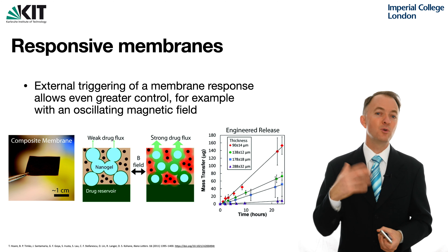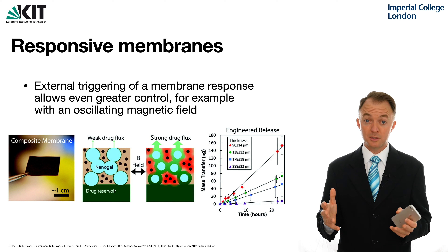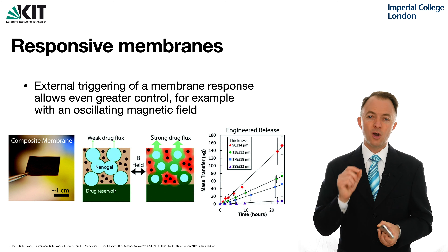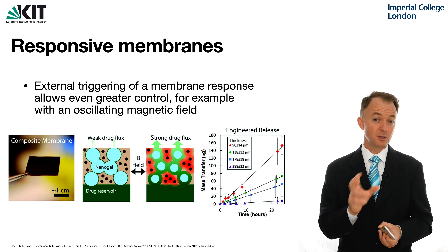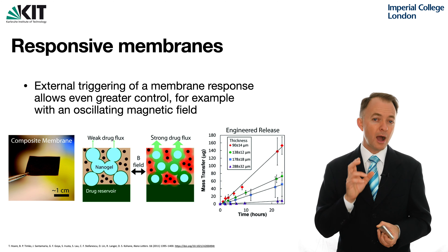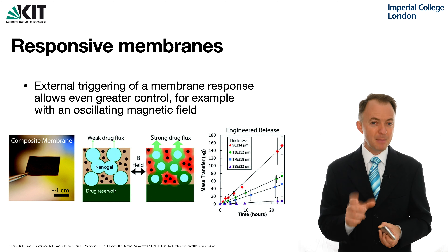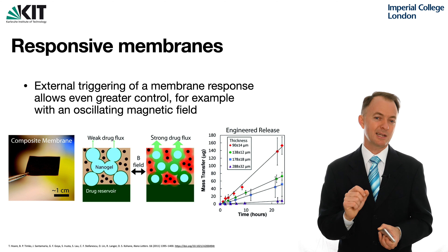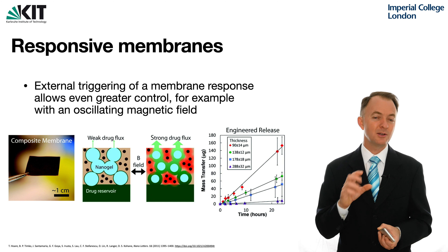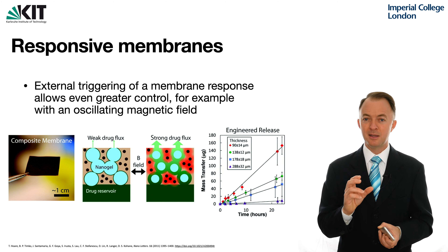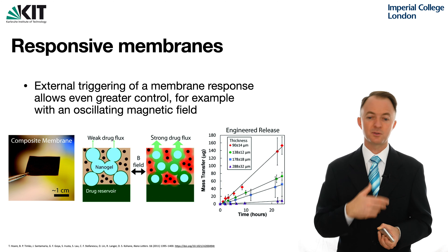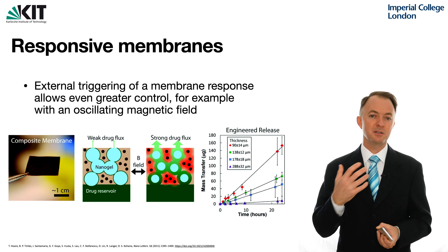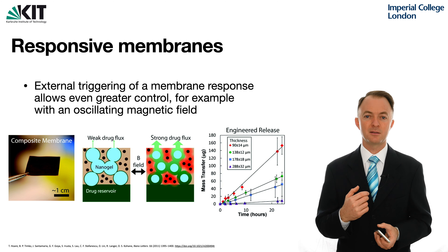As we talk more about responsive membranes today, you'll see that often it can be a direct action on the membrane that leads to the stimuli-responsive nature. However, in many cases it's actually an indirect action — the external stimulus leads to localized heating at the membrane, which then triggers increased permeability across the surface, or in this case, the faster engineered release of the payload.